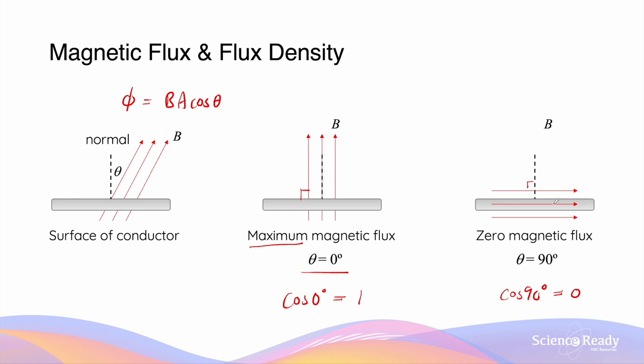Despite the fact that the conductor is inside a magnetic field, when the field lines are perpendicular to the normal, notice how they are actually parallel to the plane of the conductor or the area. So in summary, the orientation, or the angle between the magnetic field lines and the area of the conductor we are examining, is quite important in determining how much magnetic flux is actually passing through that certain area.